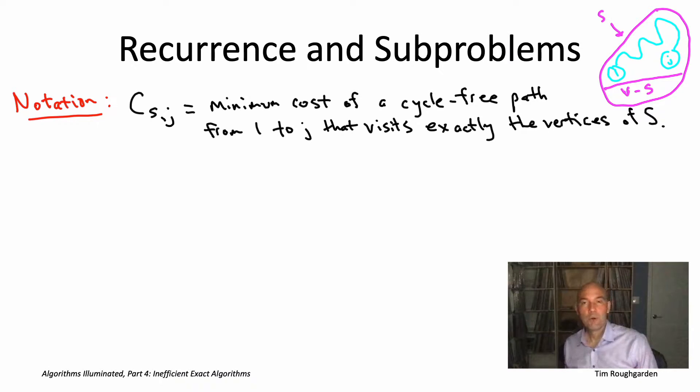And what did we learn from the quiz? Once you know k, you know what the rest of it looks like. The path prefix must be the optimum, a minimum cost path from 1 to k that's cycle free and visits exactly the vertices of V minus j. And then of course, the original path that went all the way to j also pays for that additional hop, so the cost of the edge from k to j.